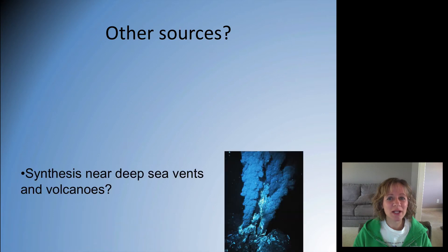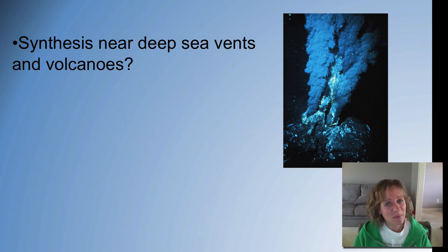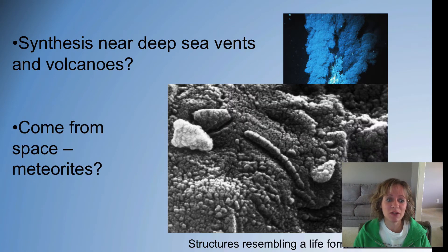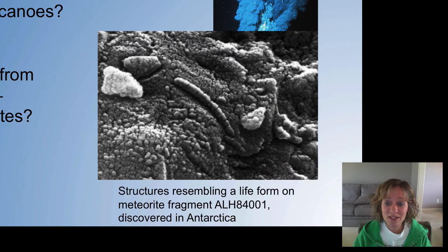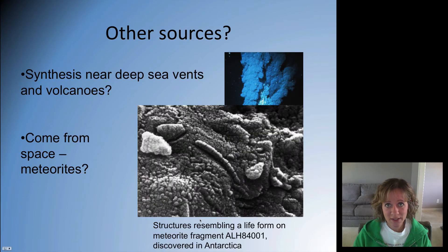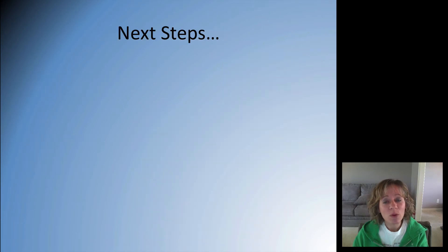How else could life have come about? Did it happen near deep-sea vents, where there's a lot of energy and a lot of elements? Maybe volcanoes had something to do with it. Could it have come from space via meteorites? We have analyzed meteorites and seen structures that maybe resemble a life form — one was discovered in Antarctica. Regardless, across these various hypotheses, somehow some organic compounds were created.